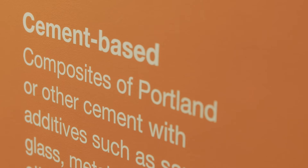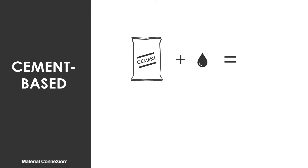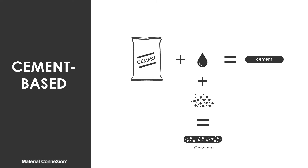Today I'm going to walk you through how we define a cement-based material. For the sake of categorization and our diverse clientele, we define a cement-based material as composites of Portland and other cements with additives such as sand, metal, glass fibers, and other aggregates. Cement is the powdery mix of calcinated lime and clay that you find in those paper bags at the hardware store. This category covers both cement and concrete, as cement is the binder material that holds together the aggregate that forms concrete.